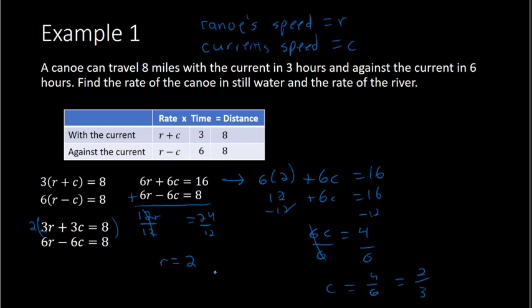So we have concluded that R, which is the canoe's speed, is 2, and that's going to be in miles per hour. And the current speed is 2 thirds miles per hour. And if you wanted to, we could double check by plugging 2 and 2 thirds back in for R and for C. And we would find that that is the correct solution.